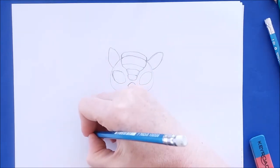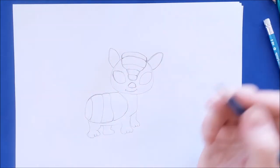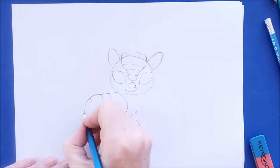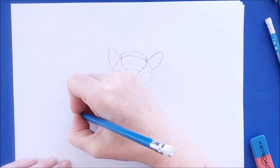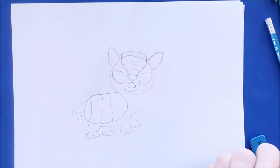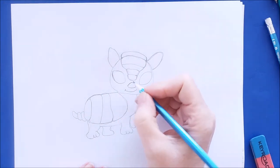This armadillo needs a tail. And I'm going to draw a couple ovals in here. Each oval gets a little smaller as we get towards the end of the tail. And there's three ovals there.